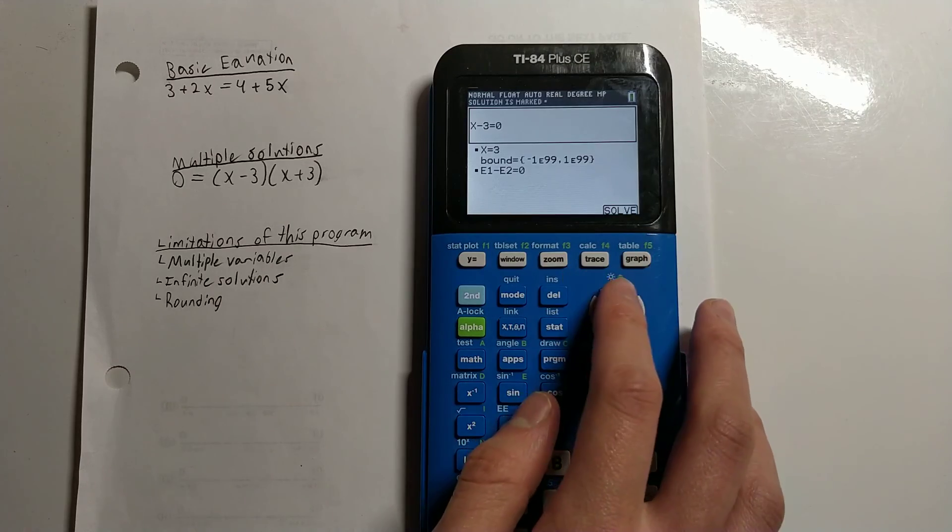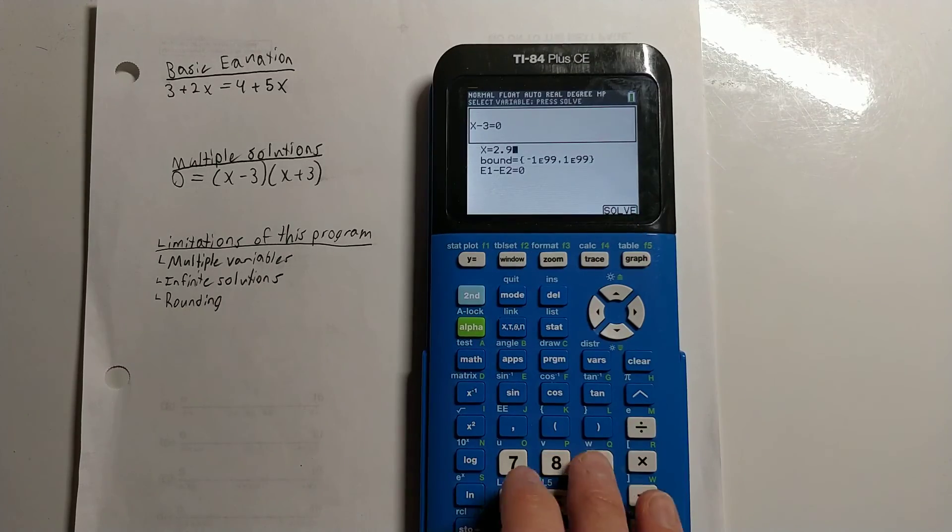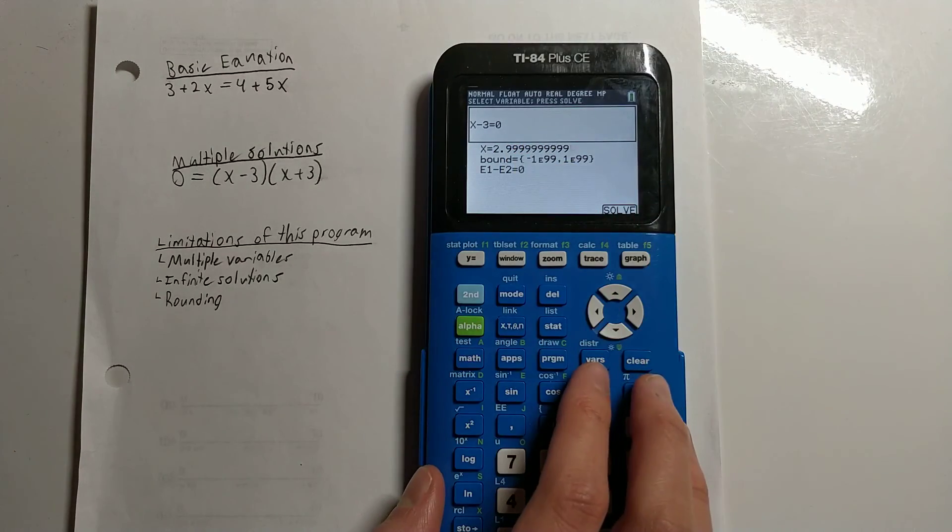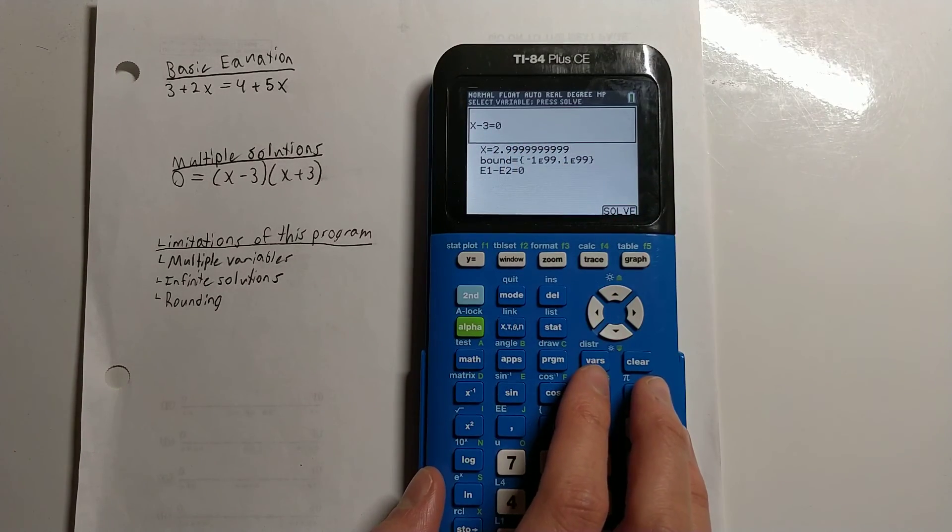Apparently it's not doing it this time. Sometimes it'll give you something like 2.999 and just a bunch of 9s. So you just have to recognize that that's equal to 3 and that the program is not always going to be 100% perfect.